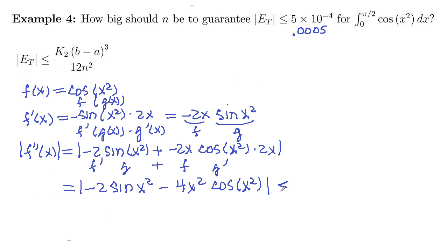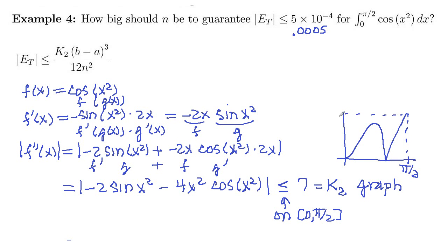Okay. So this is less than or equal to 7 on the interval. This is on the interval from 0 to pi over 2. And that overestimate, that's our value k sub 2. So that's from the graph. I'm going to sketch that graph here. And this is at pi over 2. And there's that 7.